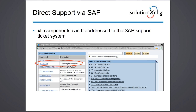You go into the same SAP support ticket mechanism, select the XFT add-on solution, and select the XFT part number. Through that integrated support approach, we can diagnose whatever situation you're facing and get you an answer quickly — whether that's in your development system, quality control system, or production system. The support works exactly like SAP support, so there's no ambiguity about whether it's an SAP problem or an XFT problem.